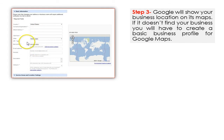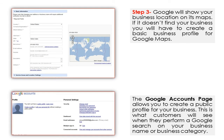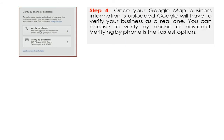The street address of your business, the city, town, state, zip, phone number, etc. — all you're doing is filling in basic information about your business. The Google accounts page allows you to create a public profile for your business. This is what customers will see when they perform a Google search on your business name or your business category. Step four: once your Google Map business information is uploaded and you've completely filled out your information — and again, it's just filling out the form that Google provides for you.